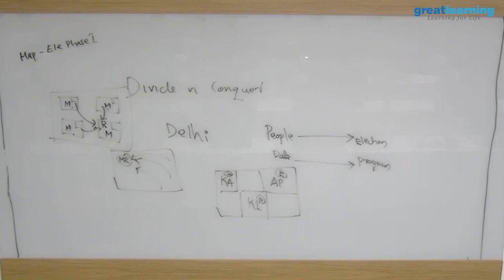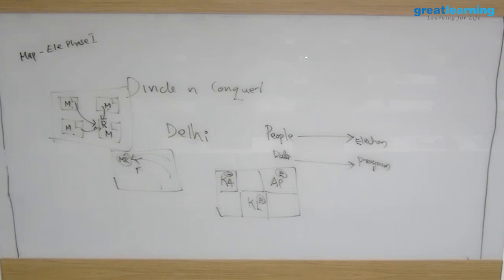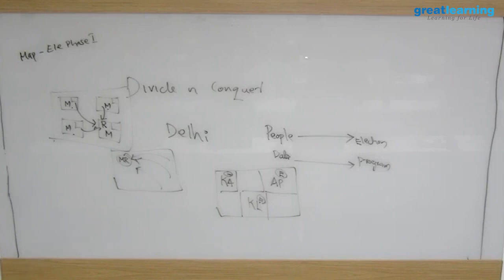The Mapper program executes on every machine where you have a block of your data file, and it produces an intermediate result. This intermediate result is fed into the Reducer. When writing code, you need to figure out what logic to put in the Reducer, because the Reducer receives the Mapper's output, processes it, and gives you the final output. This is the divide and conquer rule, and the same concept is applied across many areas in IT - not only in Hadoop - wherever you have distributed data.